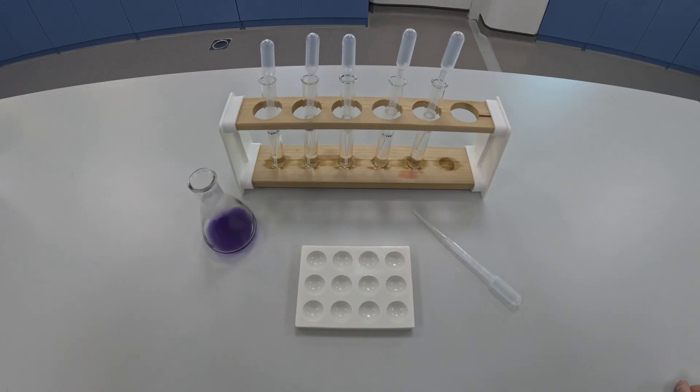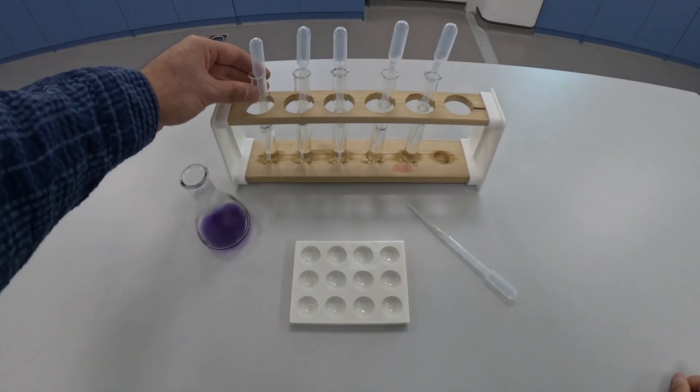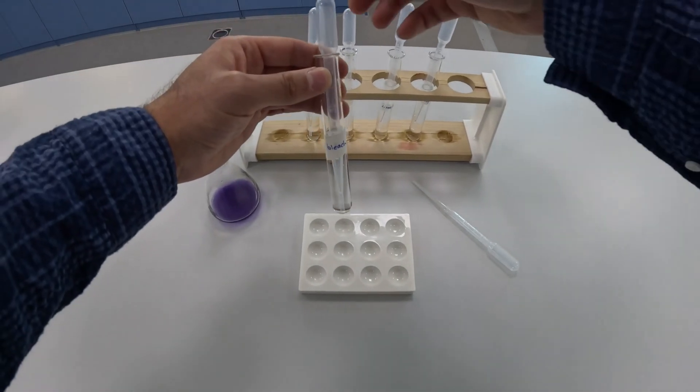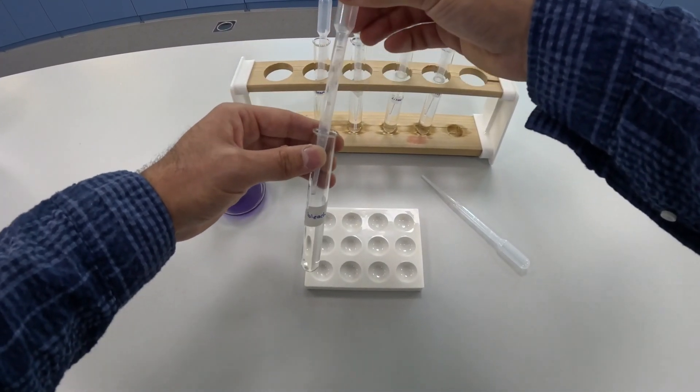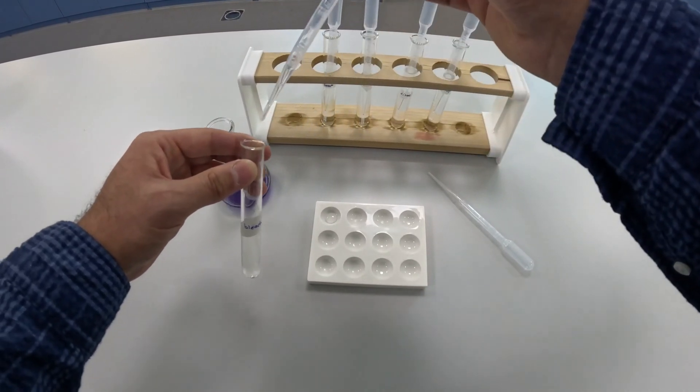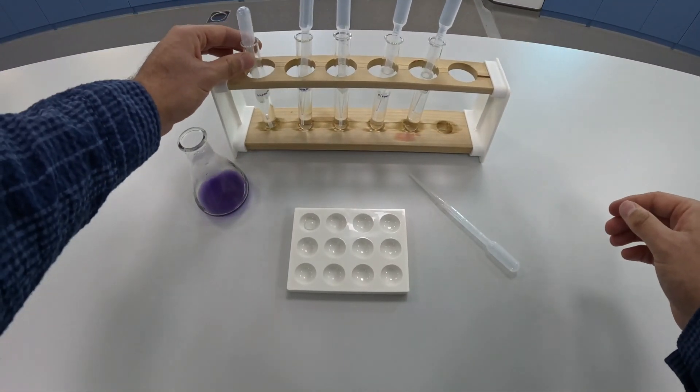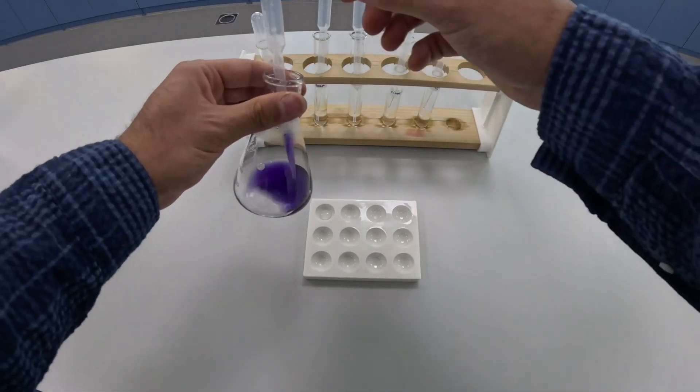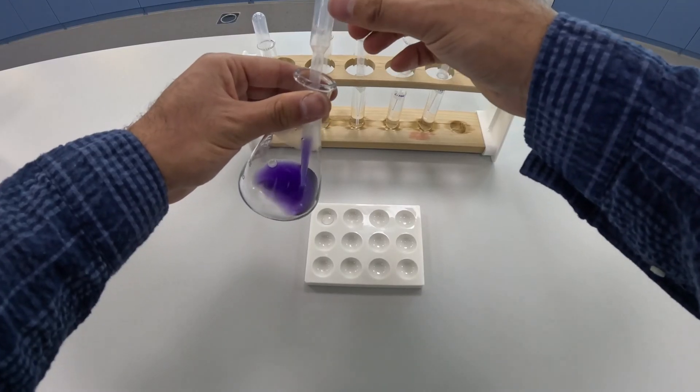Now we're going to test our indicator on some different substances. The first one we're going to use is bleach. I'm going to add a few drops of bleach into the spotting tile, and then I'm going to add a few drops of my indicator to the bleach and observe the color change.